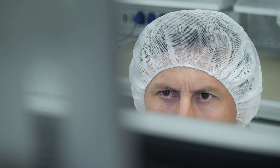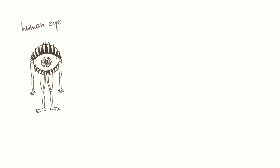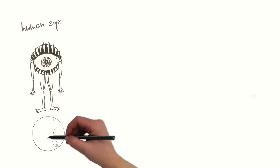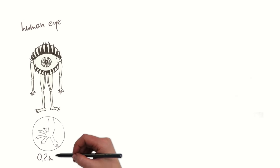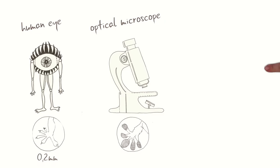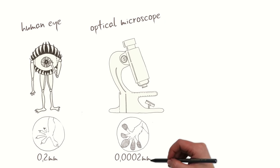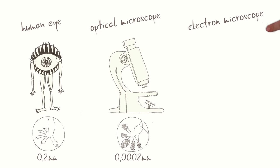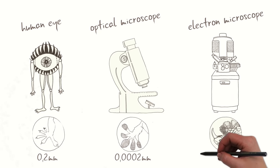A human eye, at its best, has only a resolution of .2 millimeters, while the optical microscope has two ten-thousandths of a millimeter and the electron microscope has up to 50 picometers. Wait a minute. That's too many numbers.